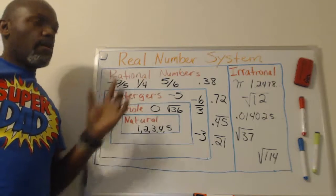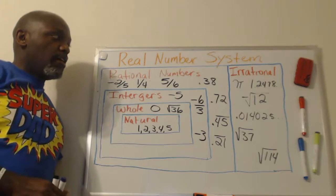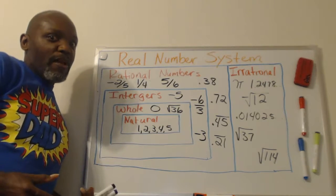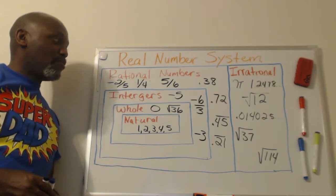So in the real number system, all numbers are real numbers, and then when you get into a different section, you'll see what they call imaginary numbers. But we're going to talk about real numbers today.